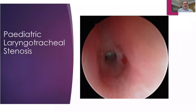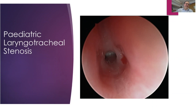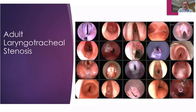Pediatric airway stenosis is a very homogeneous disease — the vast majority is post-PICU or post-NICU stenosis, with standardized treatment pathways and good physiological response. Adult laryngotracheal stenosis is a lot more complex: greater variety of diseases, presentations, and treatments required. Whatever you do often doesn't work very well — you fix something and it recurs. There is a high risk of re-stenosis after all interventions, so these patients are with you essentially for life.